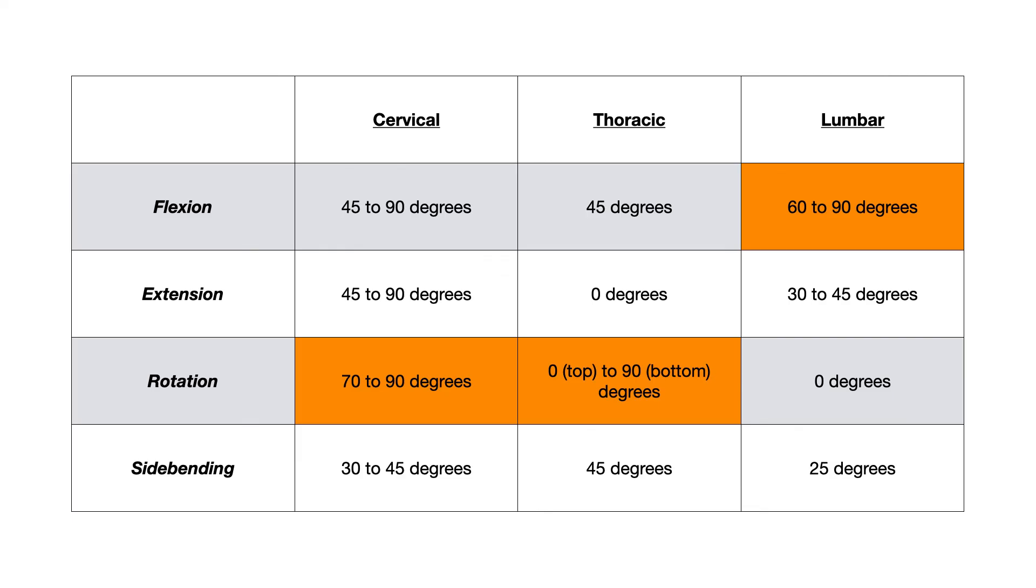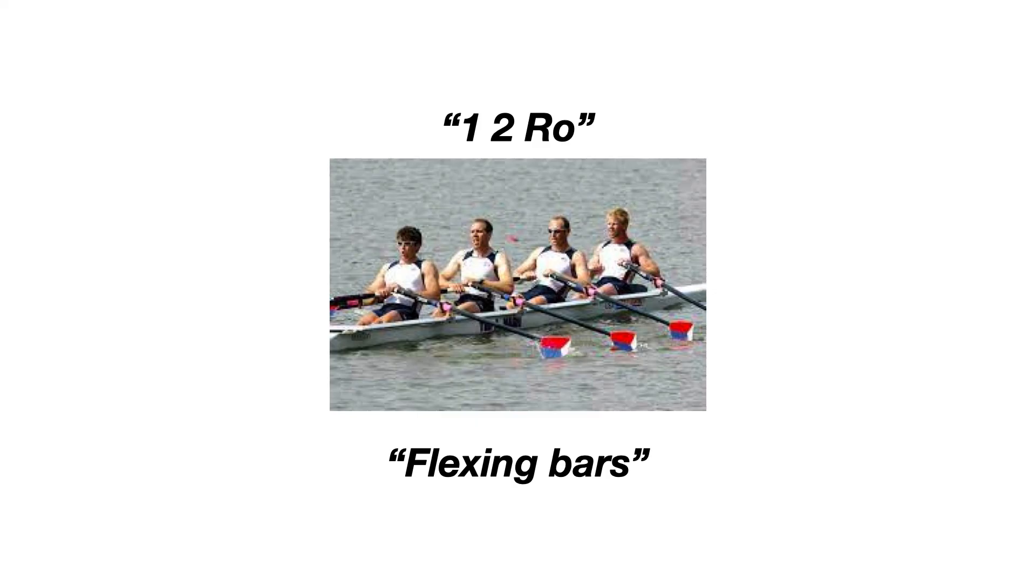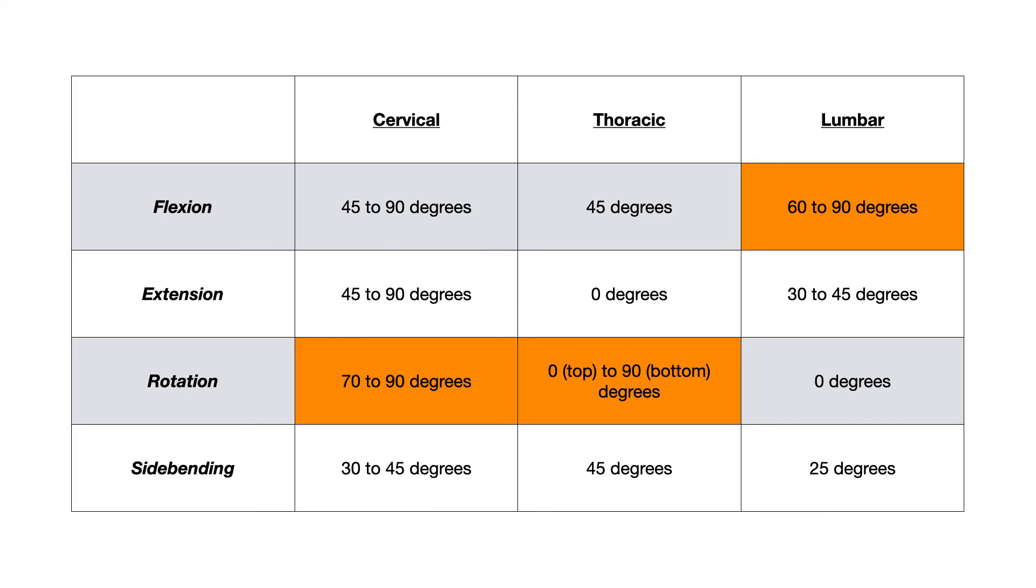So the mnemonic that you could use to memorize that if you need some assistance is one, two row and flexing bars. So one, two row, the one refers to the first spinal segment. So that's cervical. Two refers to the second spinal area, and that's thoracic. And then row means rotate. So just like you might hear on a rowing team, one, two row, one, two row, cervical thoracic rotation. So that tells you that in the first and second segments, rotation has the greatest range of motion. And then lumbar, the greatest range of motion was flexion. So flexing bars. As an avid listener of rap music, I always think about my favorite rapper flexing on the bars on the song. So flexing bars just kind of makes sense as far as the mnemonic goes. But this is your summary table. This is range of motion.